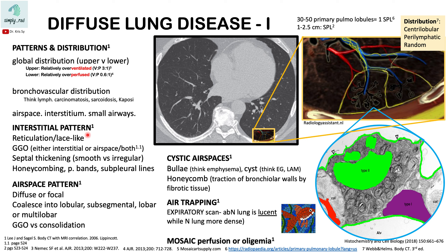We're going to talk about the diffuse lung diseases. A nice approach to reading chest CT is to first take a bird's eye view at the pattern or distribution of the lesions — look at where the lesions are predominant. Is it upper or lower? Certain diseases prefer the upper lung zones while others develop in the lower lung zones.